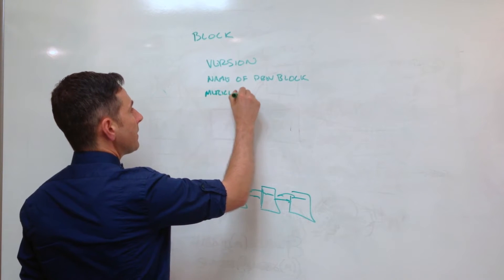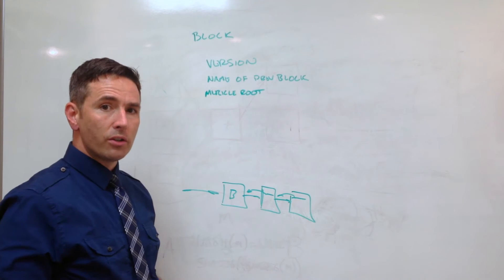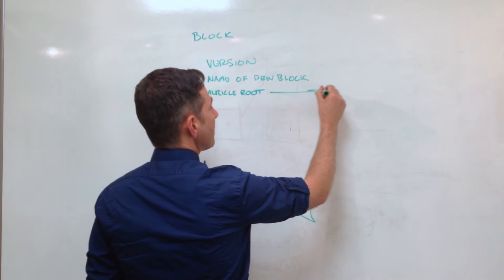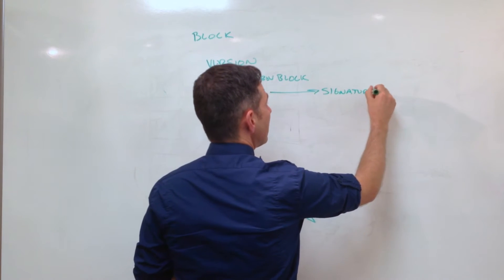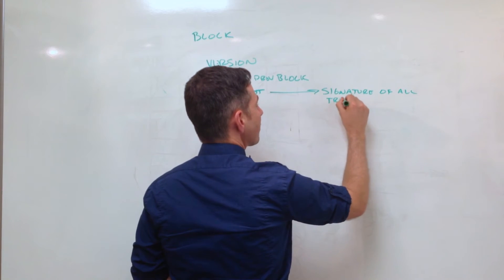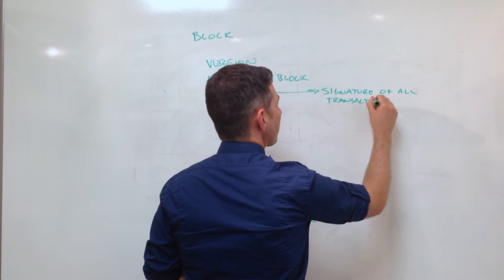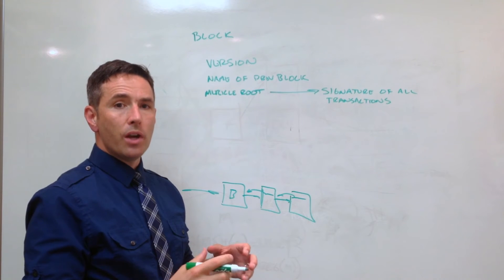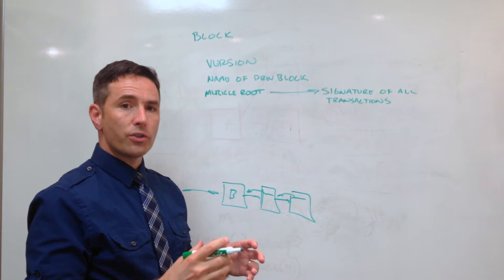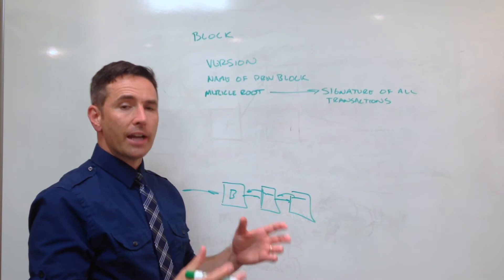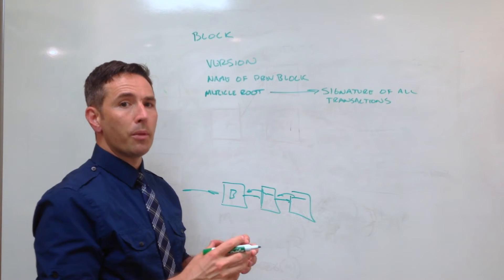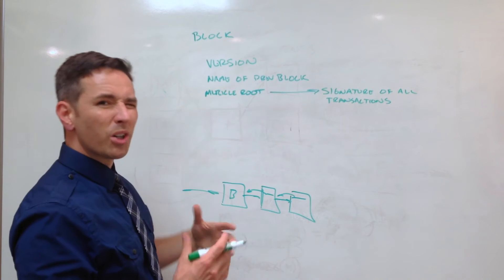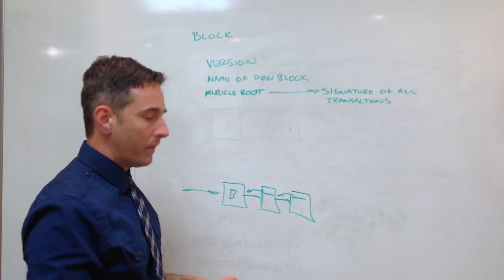That's how you ensure that one set of transactions is always building on all the previous transactions that have come before it. After that we have something called the Merkle root. The Merkle root is a digital hash that summarizes all of the transactions in this block - a signature of all transactions. You can check that the transactions you think are in the block are valid by verifying that their signature matches the Merkle root.